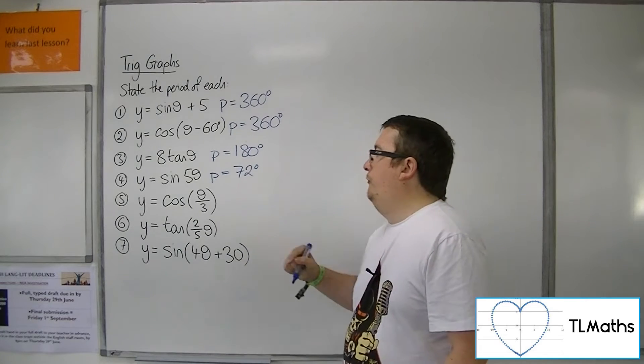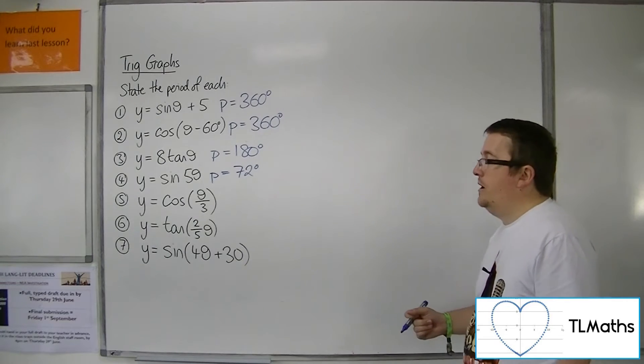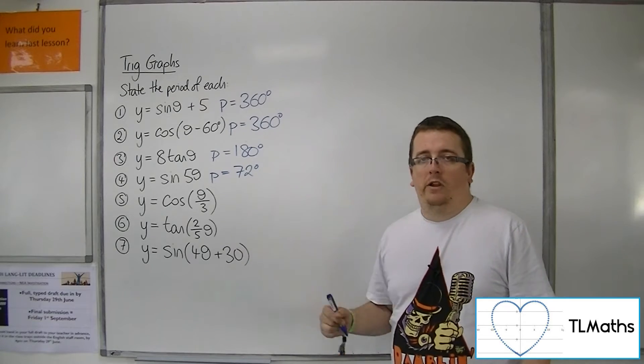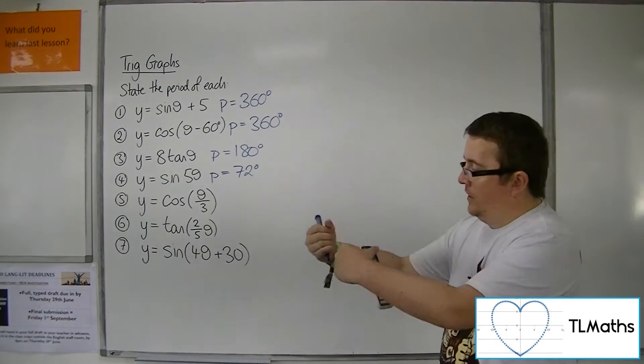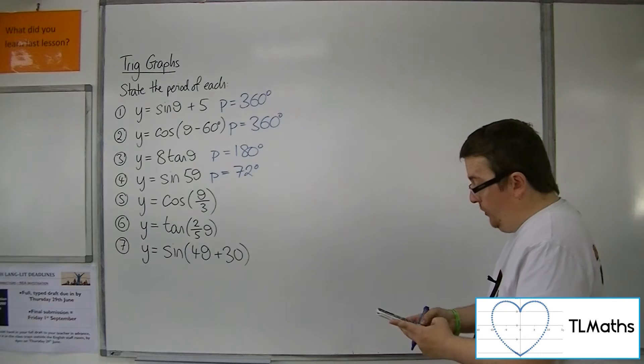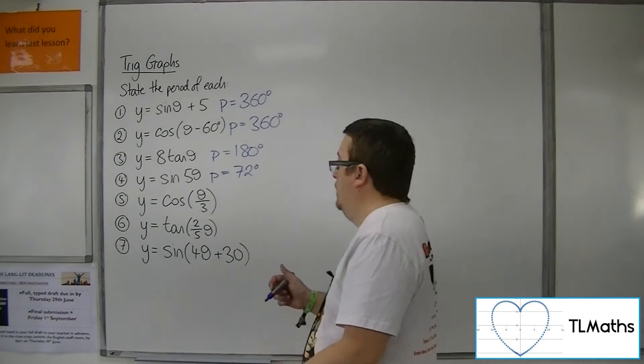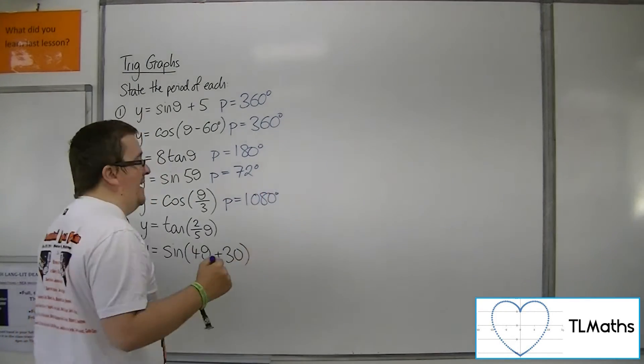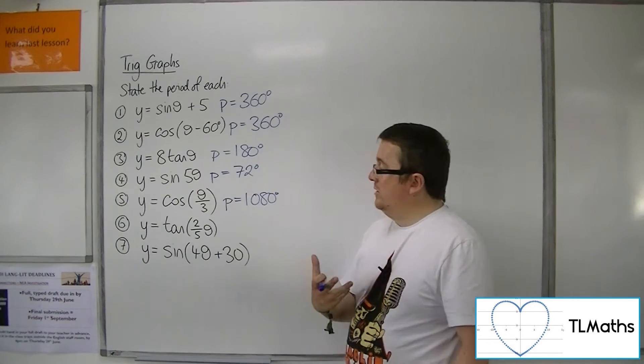As for cos of theta over 3, that's a stretch by factor 3 parallel to the x-axis, so the curve is getting stretched outwards. So 360 times 3 will be 1080, so this graph repeats itself every 1080 degrees.